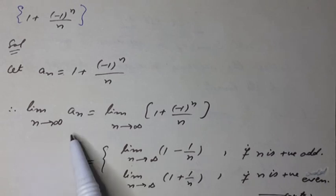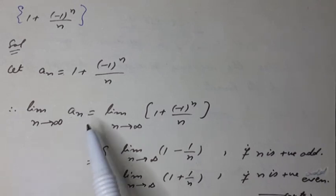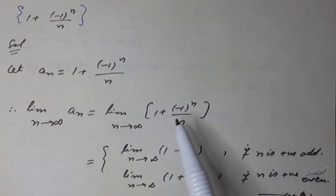Therefore, limit n tends to infinity a_n equal to limit n tends to infinity (1 plus (-1)^n over n).